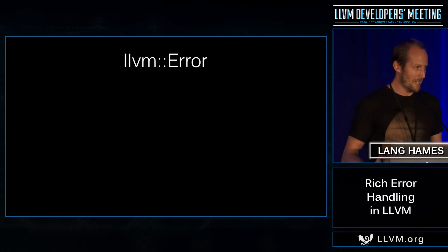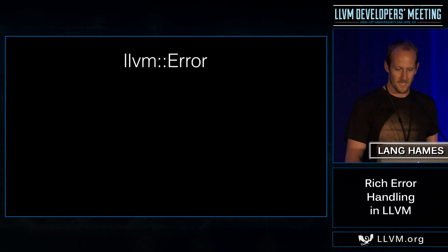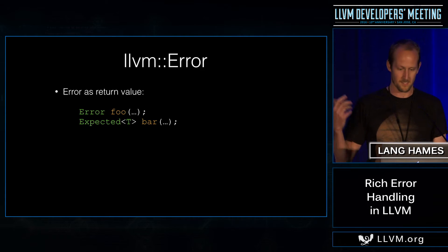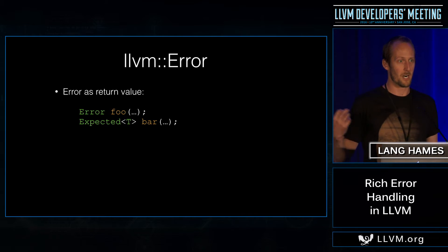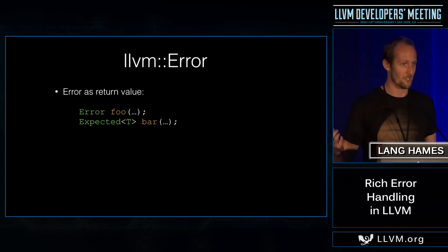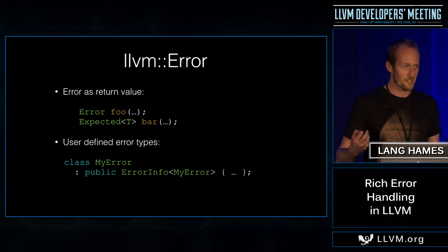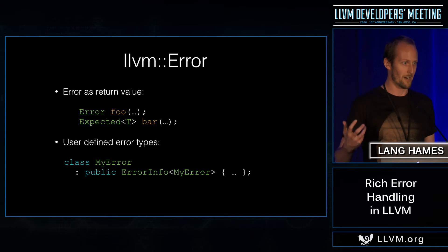So I wanted to get back some of the benefits of exceptions without actually turning them on, and that led to the development of LLVM Error. LLVM Error is an error-as-a-return-value scheme — like error_code in that respect. You return something that represents the error case. If you have a failing function foo, you return an Error. If you have a function bar that was going to return a T in the success case, you return an Expected<T>, which is a discriminated union of an Error or a T. These are just lightweight wrappers around the actual error descriptions, which are user-defined types, so you can define your error in arbitrary detail.